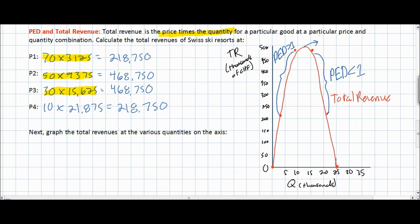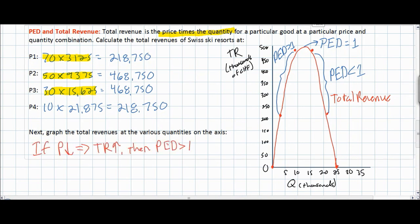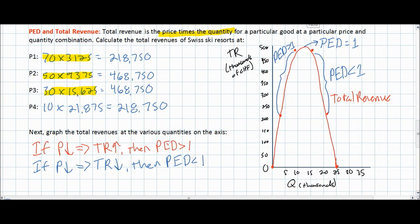But what if we are at the peak of the total revenue curve? If a decrease in price leads to no change in total revenue, we can conclude that PED is equal to one. The rationale is that if price falls by a particular percentage and quantity increases by an identical percentage, there will be little or no change in total revenues. The total revenue test can be summarized as follows: a decrease in price leading to an increase in total revenue means PED is greater than one and demand is elastic; a decrease in price leading to a decrease in total revenue means PED is less than one and demand is inelastic; and no change in total revenue means PED equals one, indicating unit elasticity.